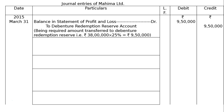The first entry will be: Statement of Profit and Loss debited to Debenture Redemption Reserve account. The company wanted to redeem ₹38 lakh debentures and 25% of this will be created as Debenture Redemption Reserve — that is ₹9,50,000. Being required amount transferred to Debenture Redemption Reserve: ₹38 lakh × 25% = ₹9,50,000.